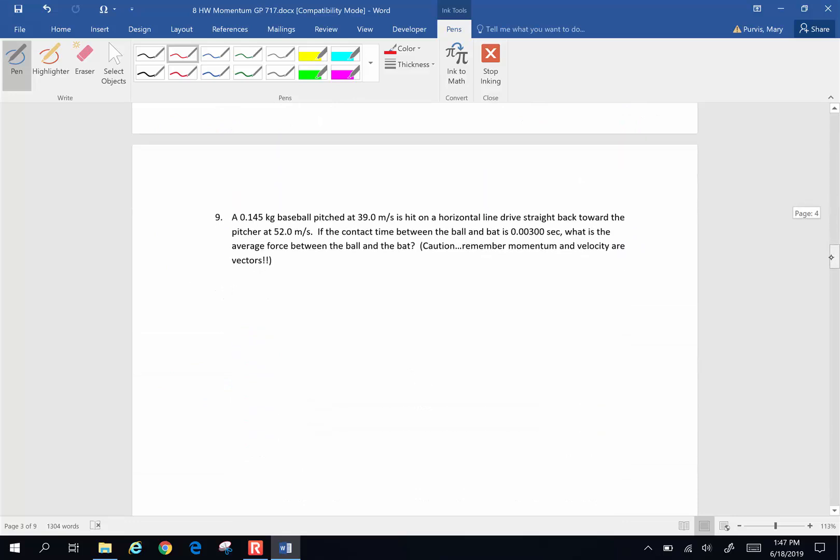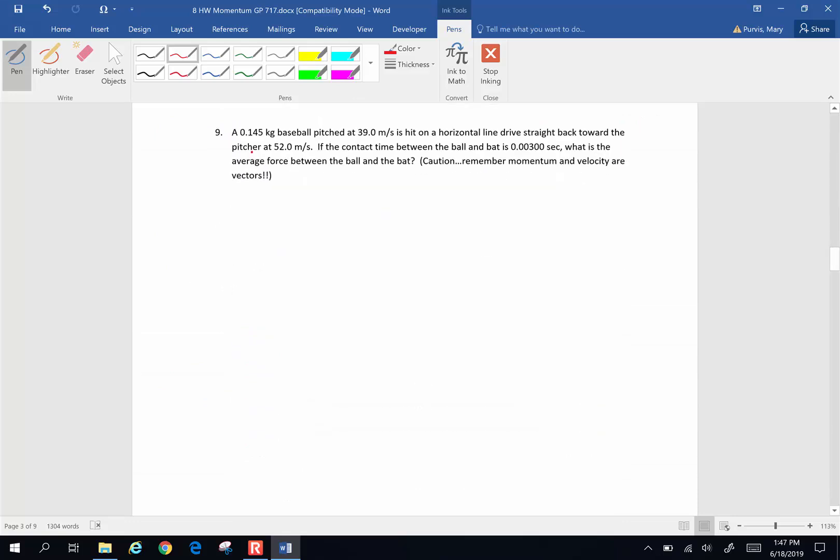Next problem, a 0.145 kilogram baseball is pitched at 39 meters per second, is hit on a horizontal line drive straight back towards the pitcher at 52 meters per second. If the contact time between the ball and the bat is 0.003 seconds, what is the average force between the ball and the bat? And caution, remember momentum and velocity are vectors.